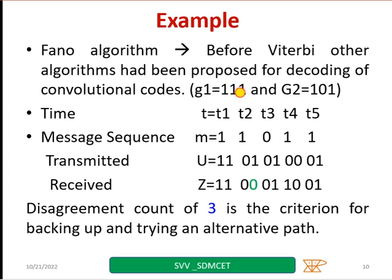Before Viterbi, other algorithms had been proposed for decoding of convolutional codes. Now in this example, we will take G1 equal to 111, G2 equal to 101. Messages are 11011 and coded is 110101001. But received, I am receiving with some error. Instead of 01, I am receiving as 00. Disagreement count of 3 is the criteria for backing up and trying to find an alternative path in the tree diagram.